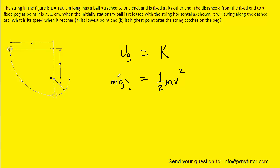Because mass appears on both sides of the equation we can algebraically eliminate it. We can multiply both sides by 2 so that 2gy equals v squared, and then take the square root of both sides to solve for the speed of the object as it reaches its lowest point.